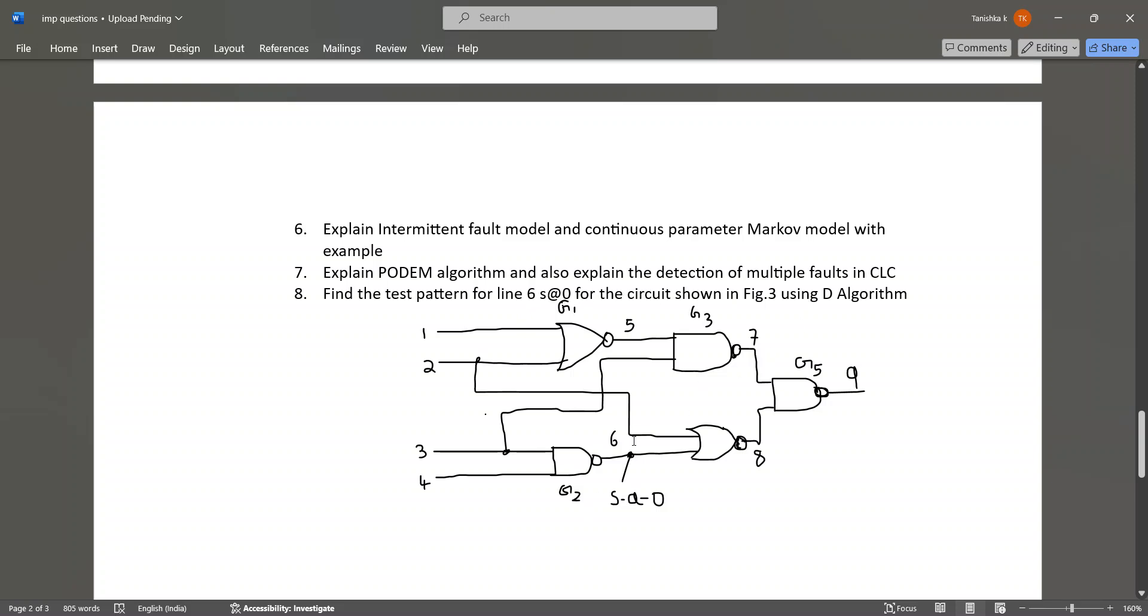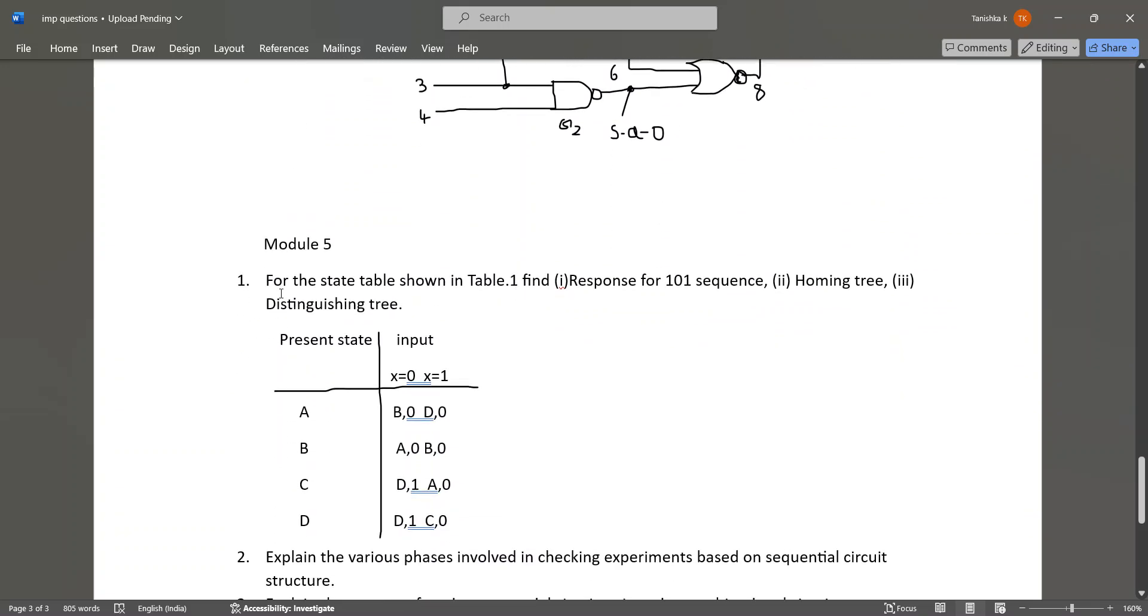Find a test pattern for line 6, that is stuck-at-0, for the circuit shown in the figure. In Module 5, the important questions are: for the following table given, you have to find the response for 101 sequence, homing sequence, homing tree, distinguishing tree.